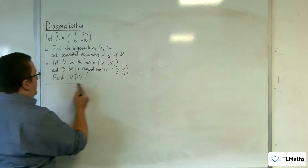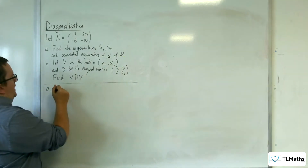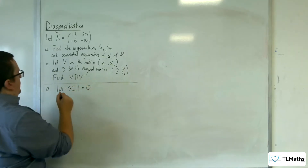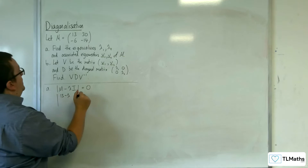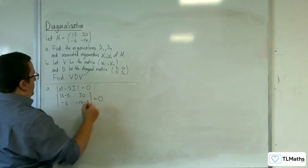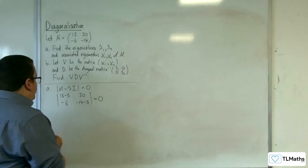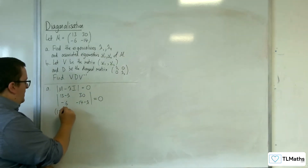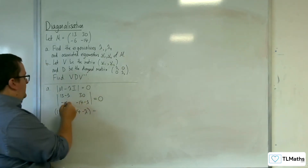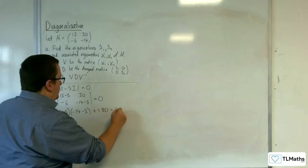So for part A, we want the determinant of M take away lambda I to be equal to 0. So we're going to have 13 take away lambda, 30, minus 6, and minus 14 take away lambda, equal to 0. We've got 13 take away lambda times minus 14 take away lambda, take away 30 times minus 6, so plus 180, equal to 0.